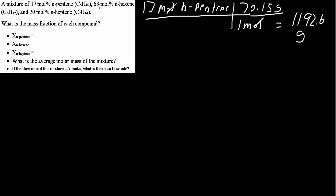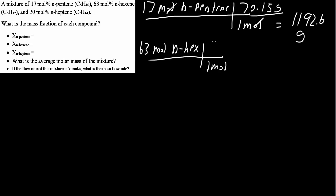Next we need to do the same thing for 63 percent of n-hexene — so 63 moles of n-hexene. We know that one mole contains 84.16 grams. Multiplying out, we get 5302.1 grams.